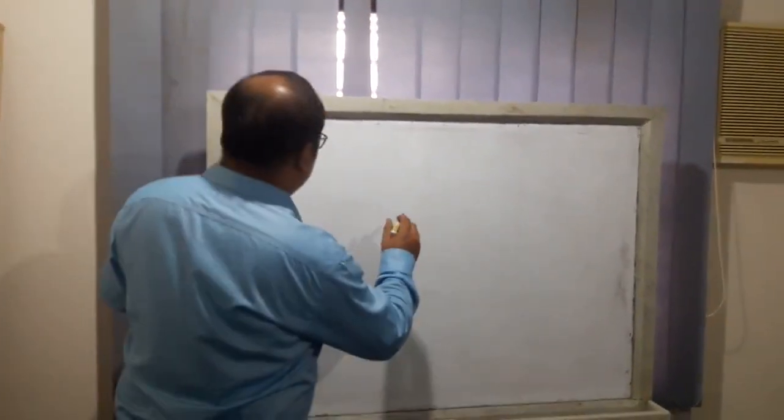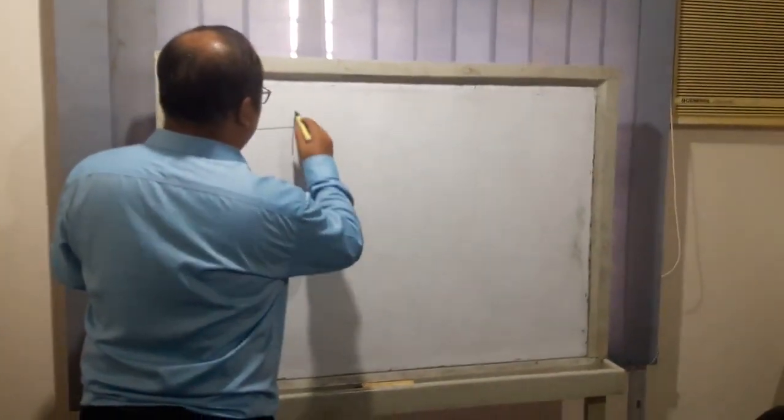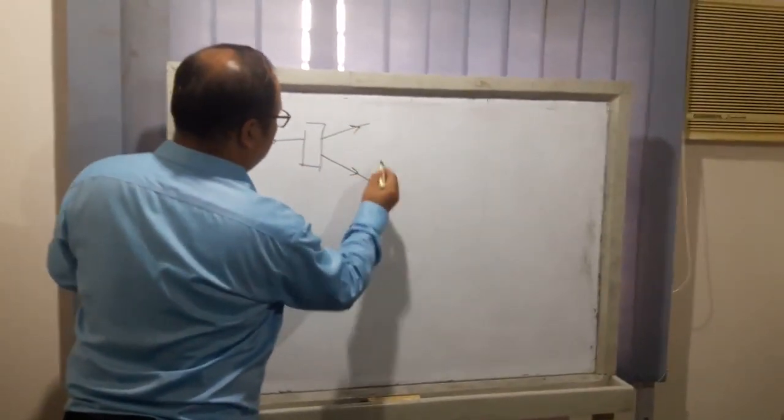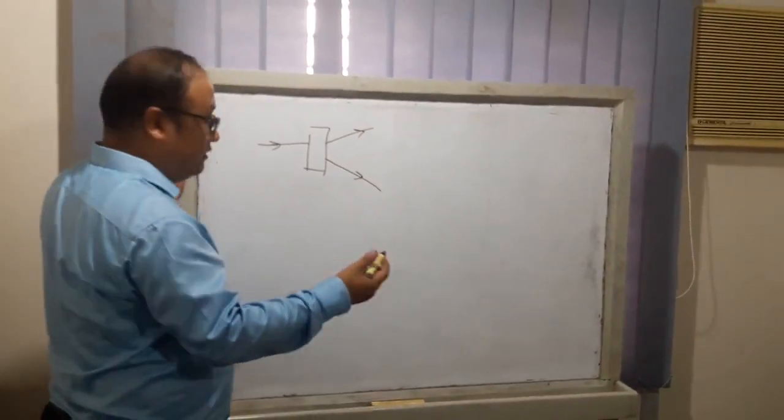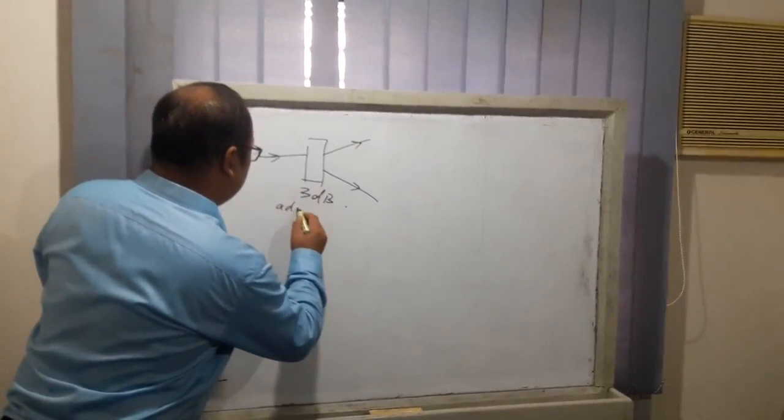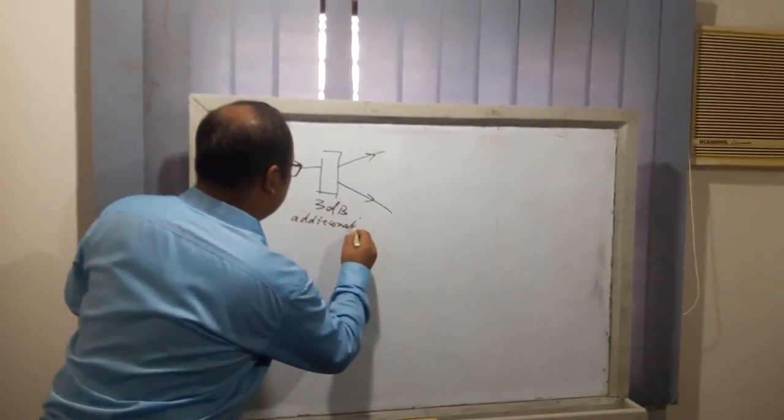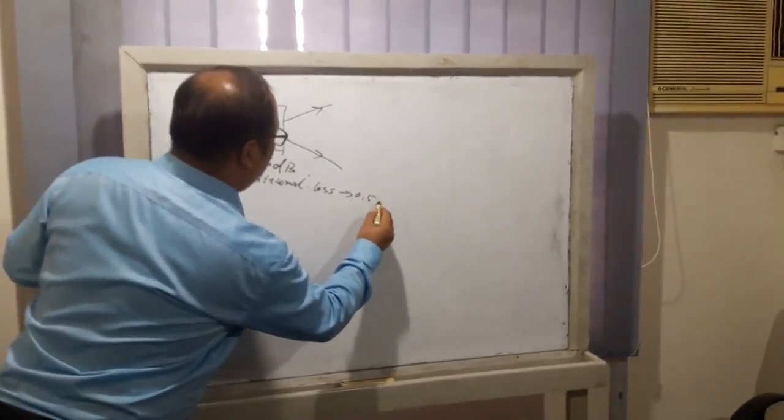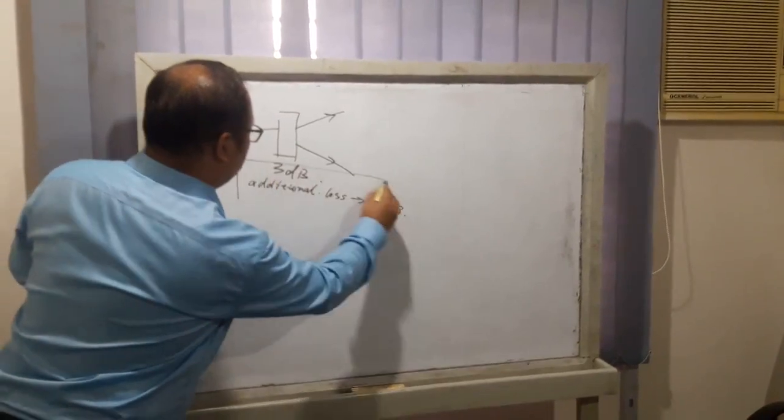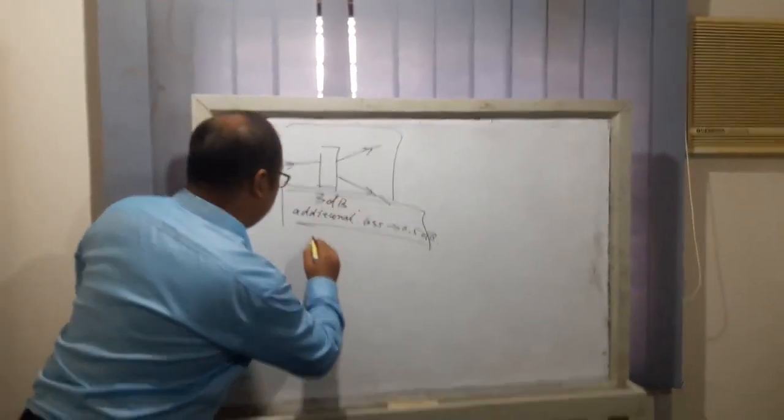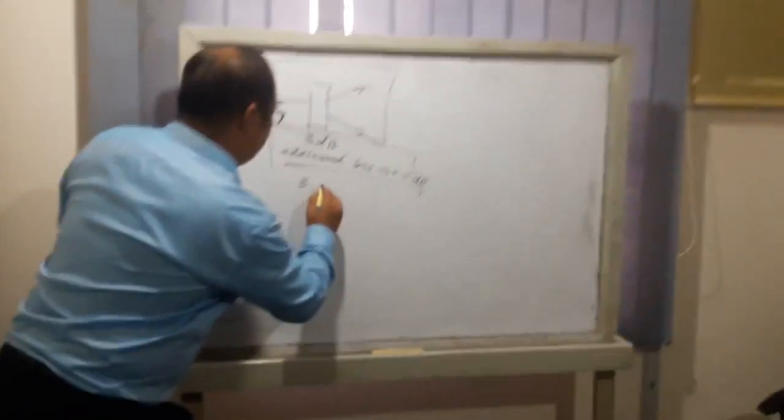This is the article of our PON system. As we know, splitter 1 to 2 to 2, the splitter's attenuation is about 3 dB and additional loss is about 0.5 dB. So the total attenuation of this 1 to 2 to 2 splitter is 3.5 dB.